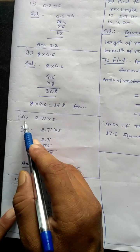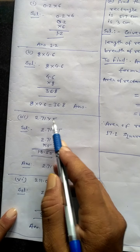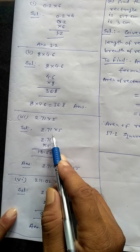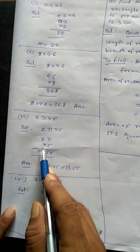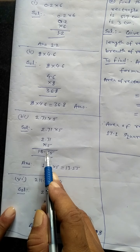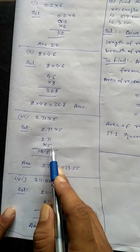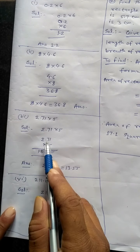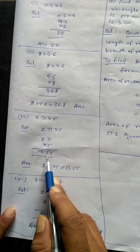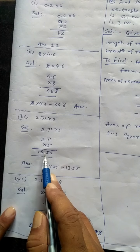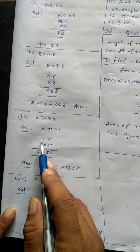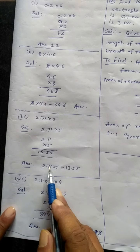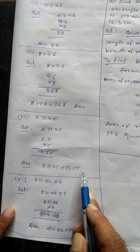Third: 2.71 into 5. Solution: 2.71 into 5. 5 ones are 5. 5 sevens are 35, write 5 carry 3. 5 twos are 10, plus 3 is 13. Therefore the answer is 13.55.